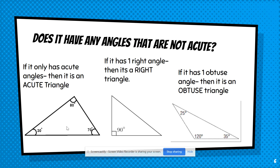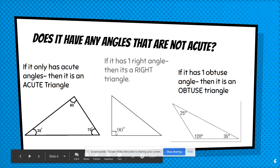If it has one right angle — one 90-degree angle — you're always going to look for the little perpendicular marking, that small square in the corner. If it's got one of those, it's automatically a right triangle.